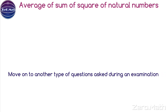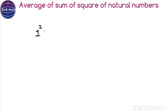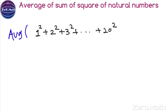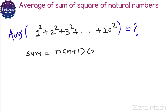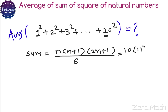Now let us move to another type of question: find the average of the squares of the first 10 natural numbers — that is 1² + 2² + 3² + ... + 10². To solve this, you need the formula for the sum of squares of a series: n(n+1)(2n+1) / 6. Here n = 10, so we get 10 × 11 × 21 / 6.